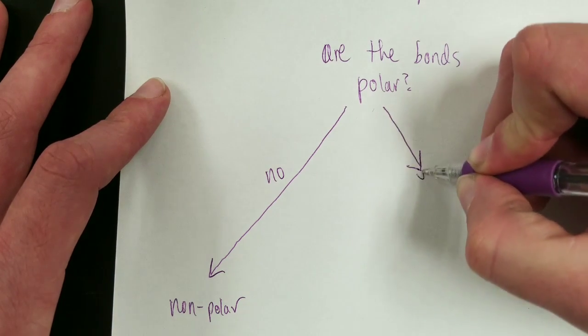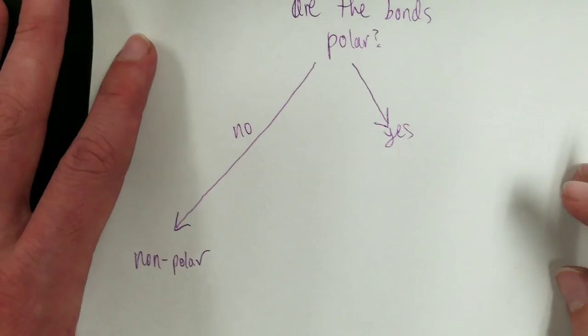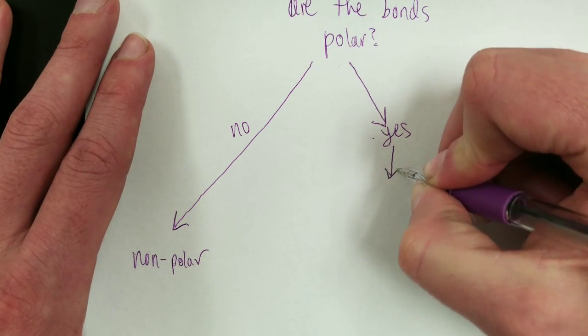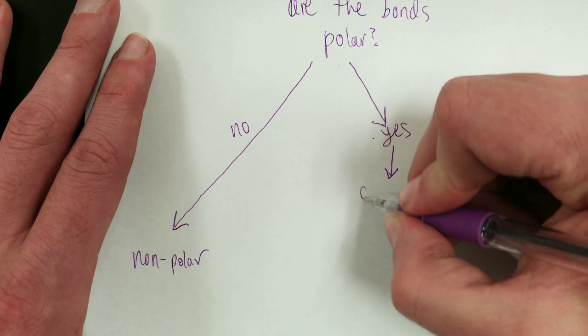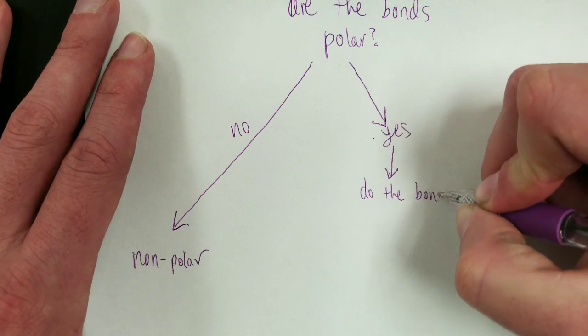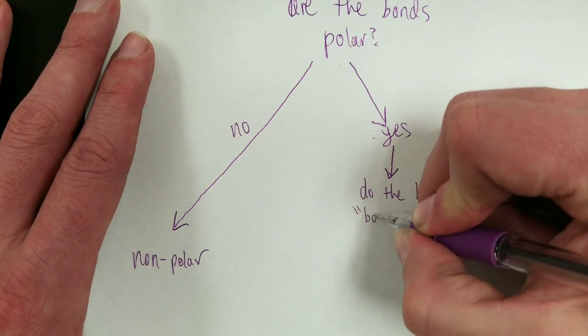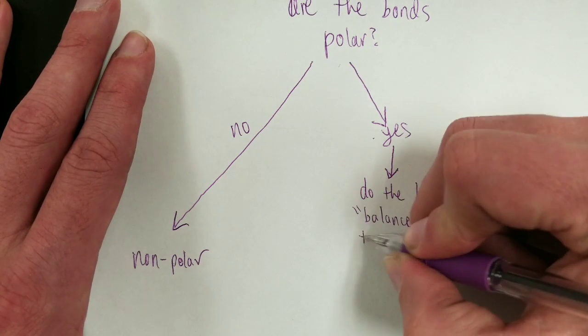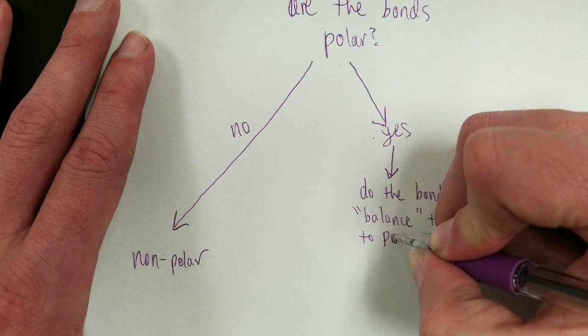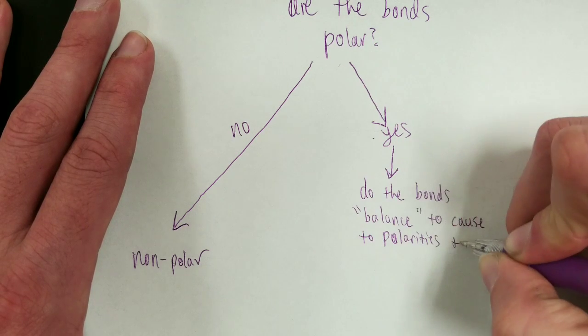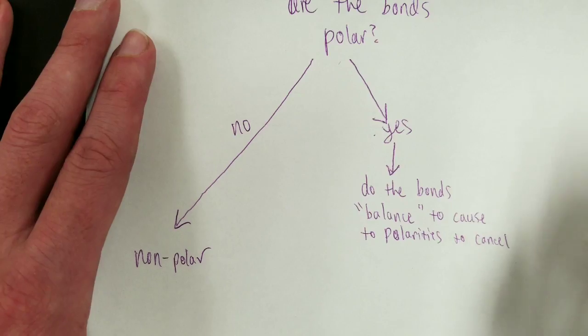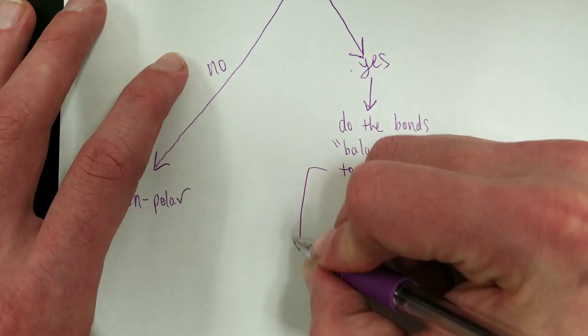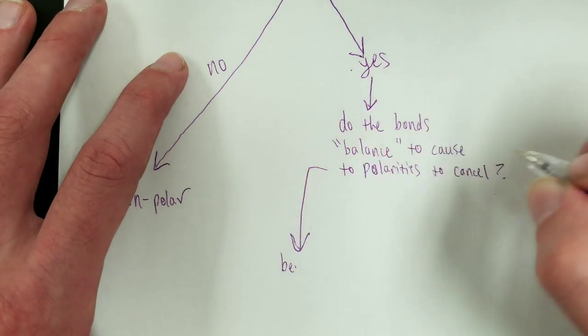If the bonds are polar, it's different. If they are polar, then do the bonds balance to cause the polarities to cancel out? If the answer is yes, they do balance.